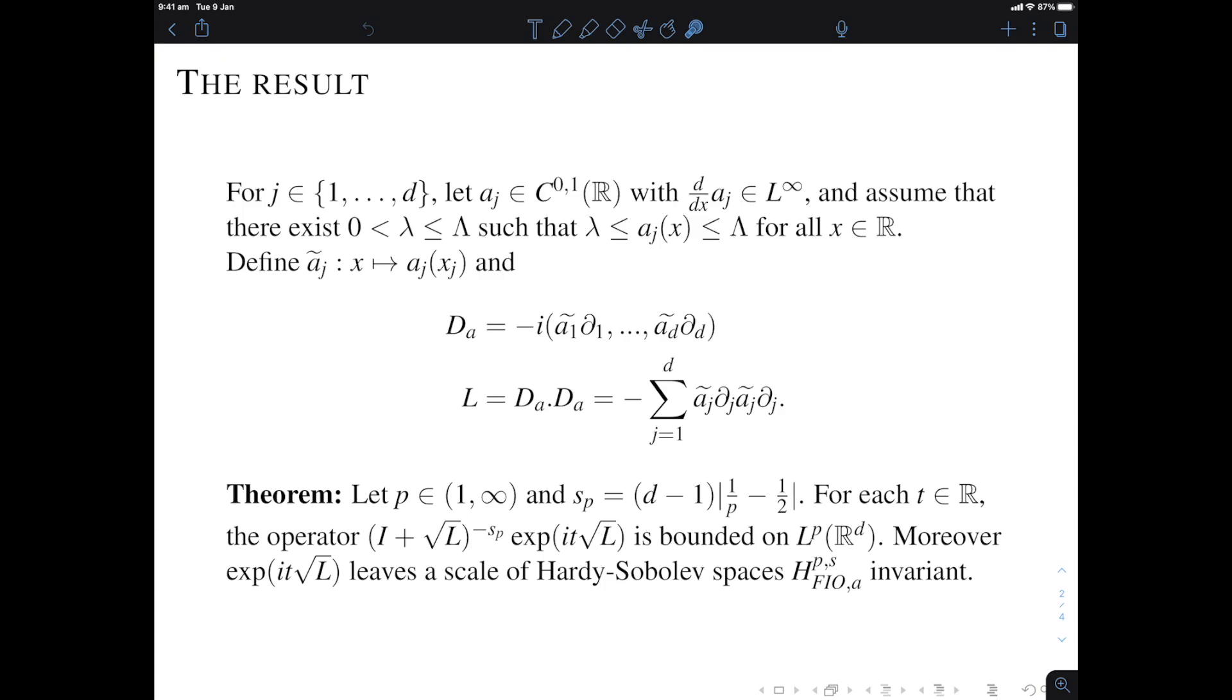derivatives are needed in order to map into L^p in fixed time. So what we're doing here is we're generalizing this result from the Laplace operator to a class of second order differential operators with rough coefficients. These operators L, they arise as the square of Dirac operators. So they arise from a variation on the gradient in the same way as the Laplacian arises from the gradient.